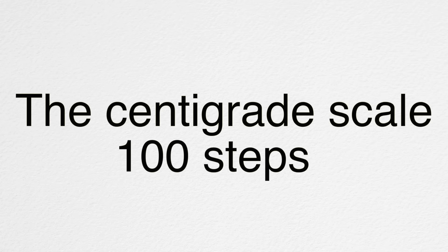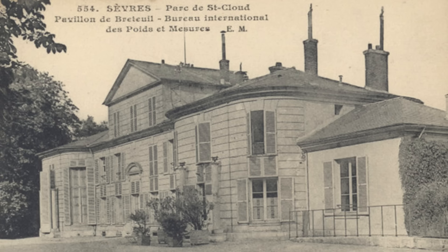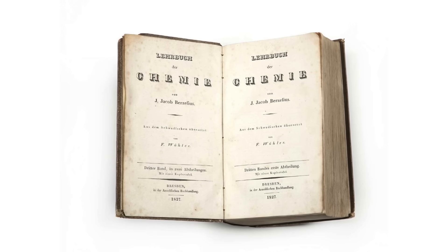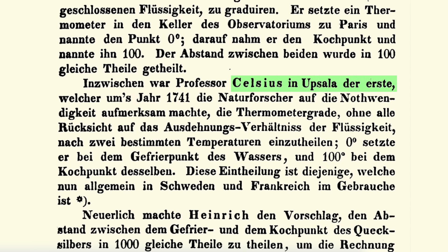For a long time, this temperature scale wasn't referred to using either of their names, and instead it was just called the Centigrade Scale, meaning 100 steps. The problem was that "centigrade" has other meanings in French, Spanish, and Italian, where a grade specifically refers to one one-hundredth of a right angle. So to eliminate this confusion, the International Bureau of Weights and Measures in 1948 decided to rename the Centigrade Scale after a scientist, bringing it into alignment with other temperature scales like Kelvin and Fahrenheit. They chose Celsius, possibly due to a popular 1800s German chemistry textbook by Berzelius, in which he identified Celsius as the first to devise a temperature scale with zero at water's freezing point and 100 at its boiling point — propagating the myth that Celsius created this scale.